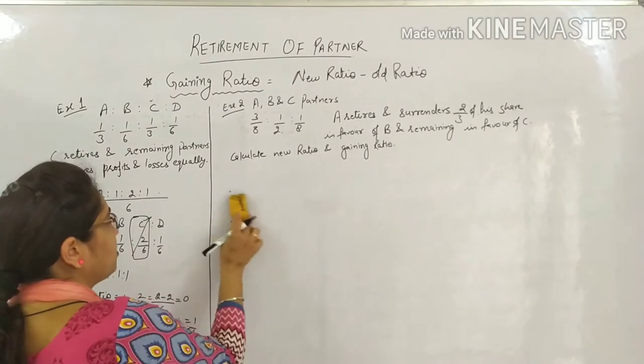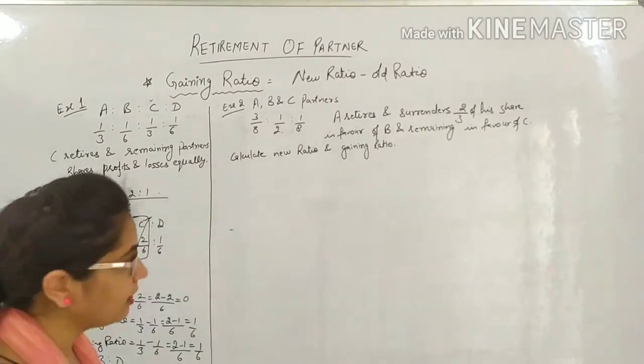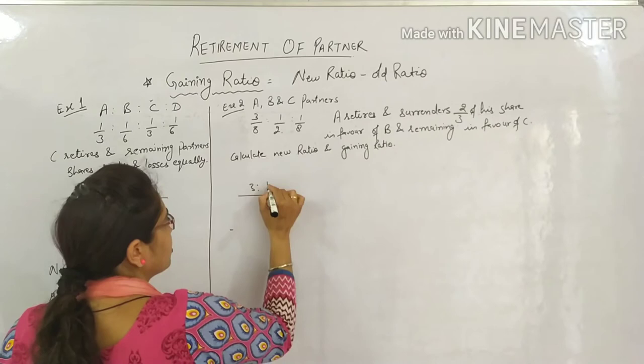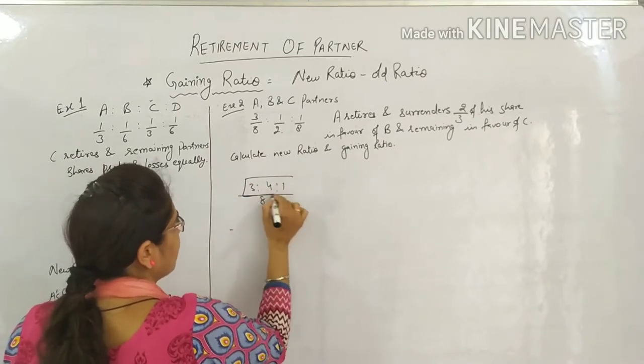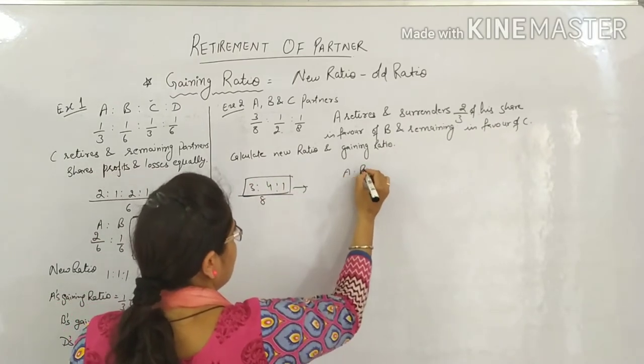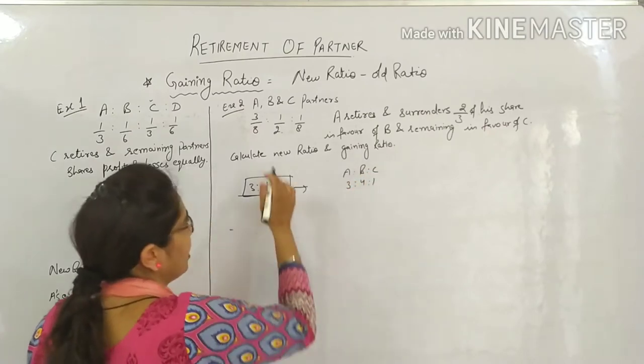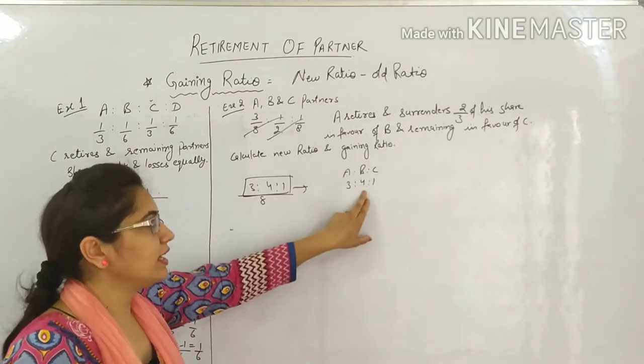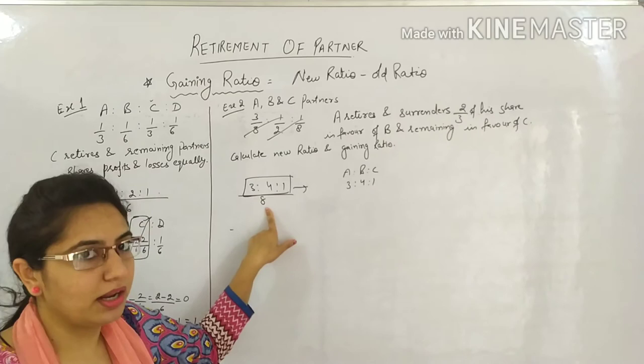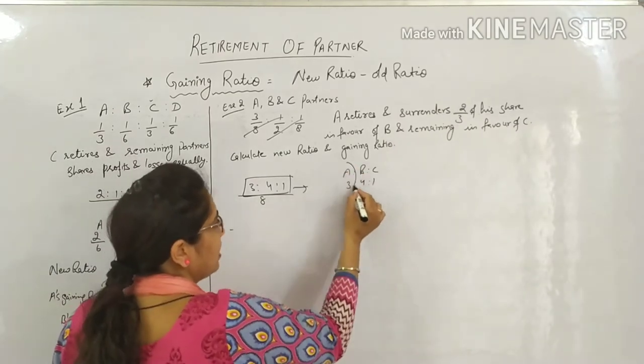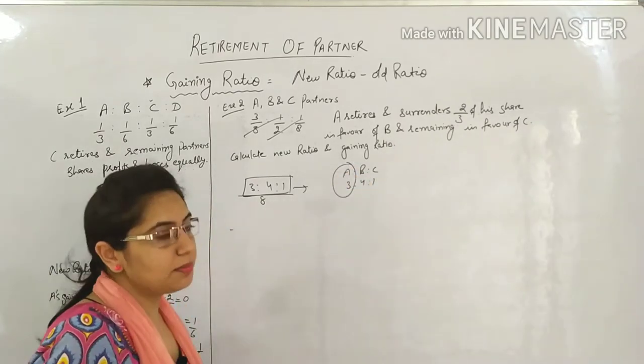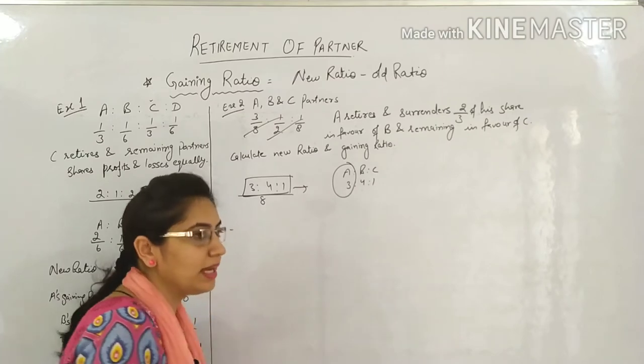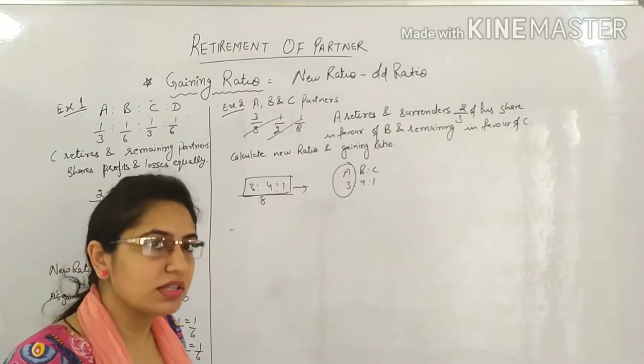Your ratios become 2, and this. This is your actual old ratio of A, B, C. Now this one is finished. Always do this after LCM. See this: 3 plus 4 equals 7, plus 1 equals 8, they equal the bottom number. Now from this, A retires. And when A retires, they give 2 by 3rd of their share to this person, meaning to B, and remaining they give to C. So first let's see how much B is getting and how much C is getting.